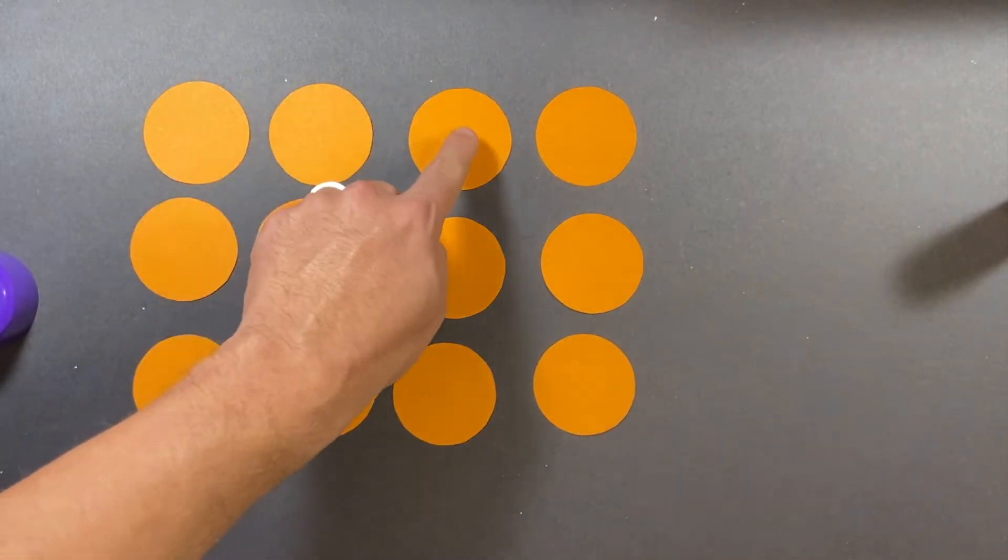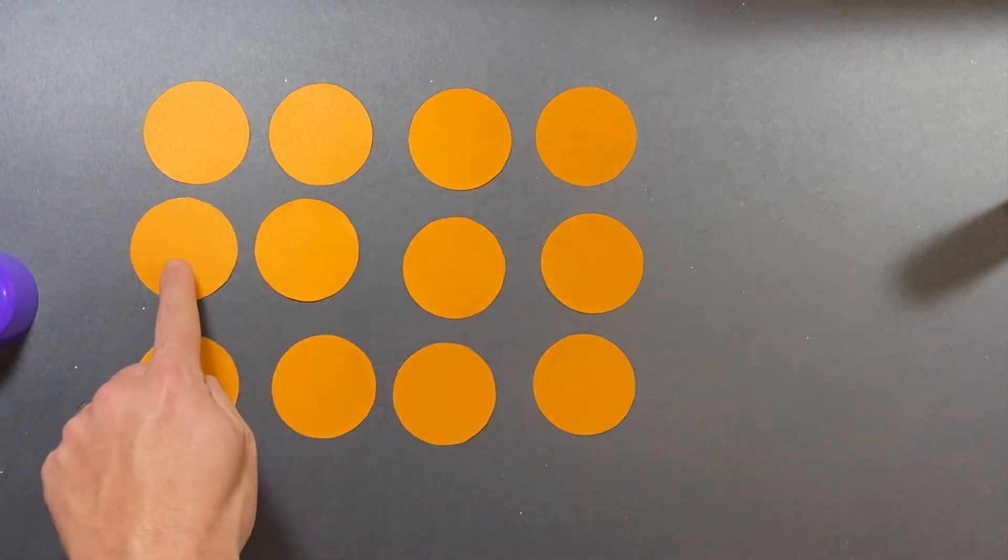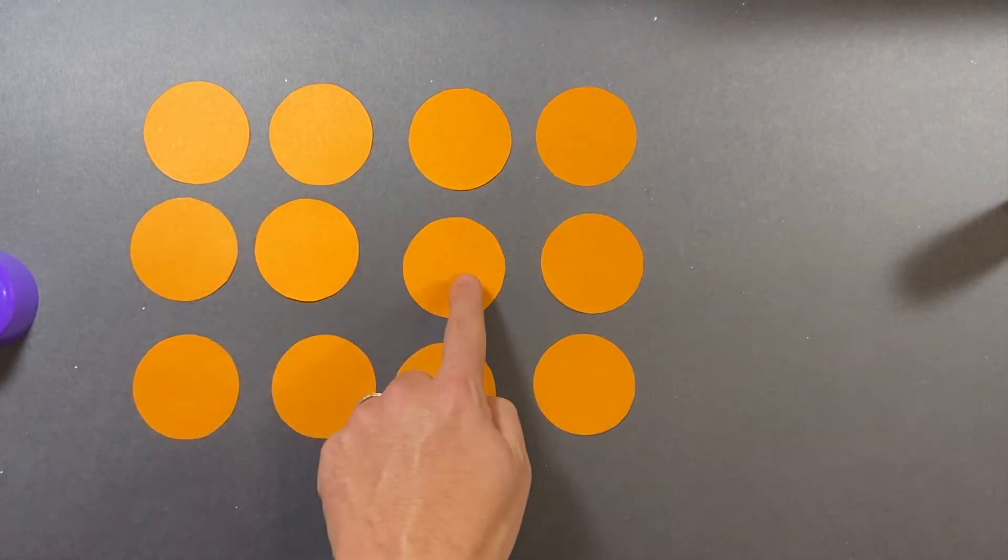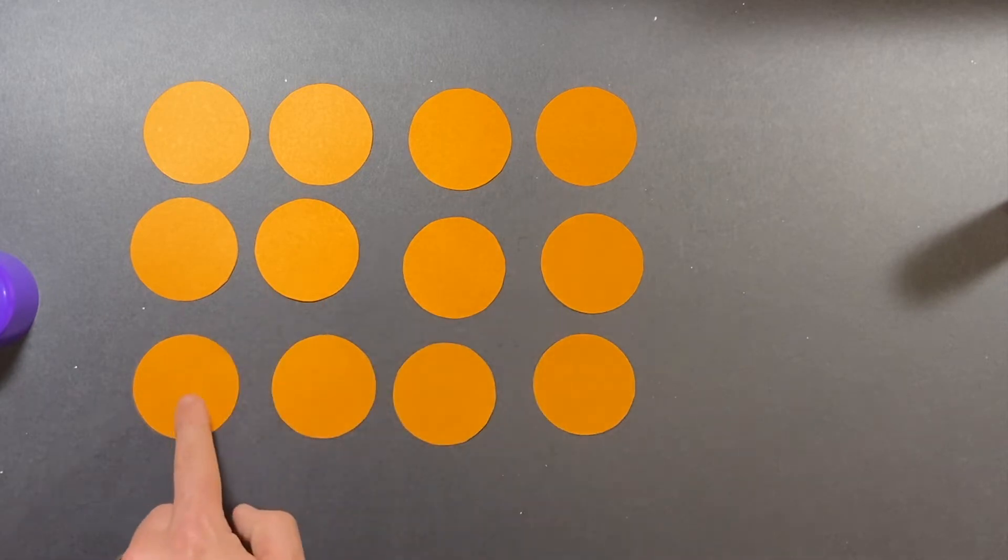Yes. Twelve: one, two, three, four, five, six, seven, eight, nine, ten, eleven, twelve circles. Nice.